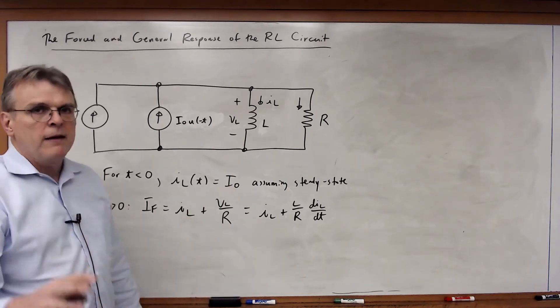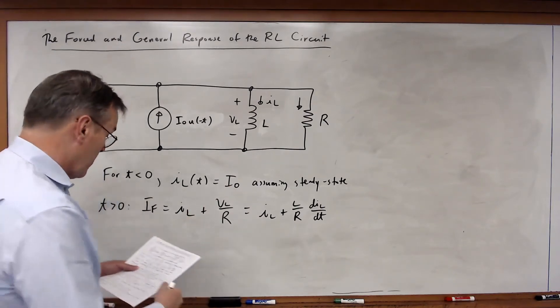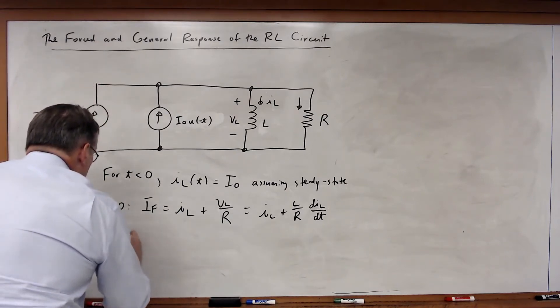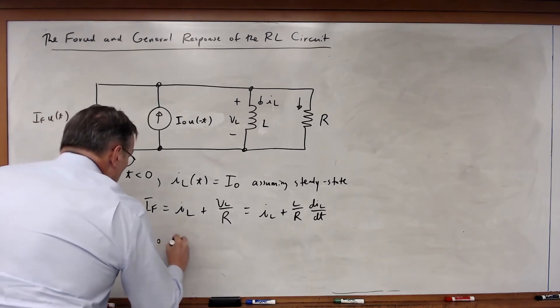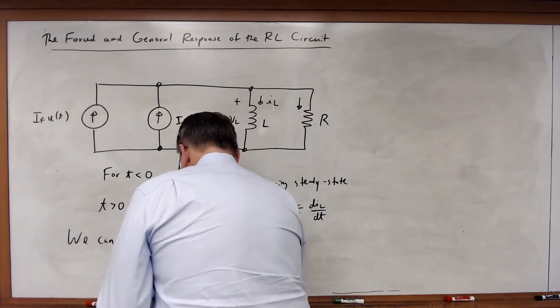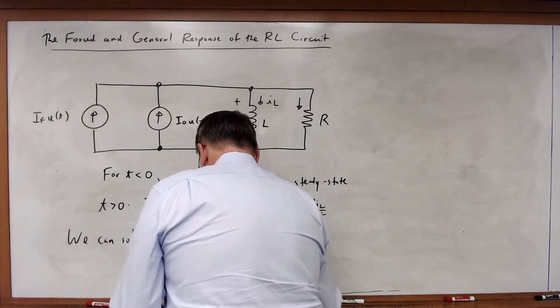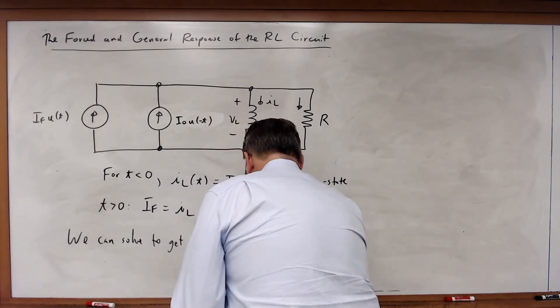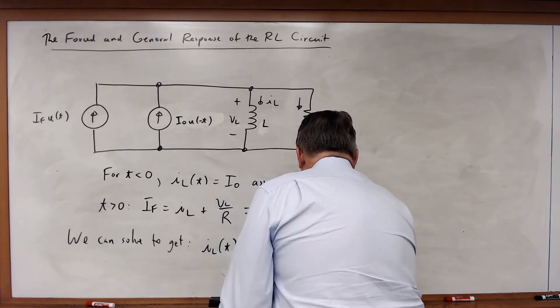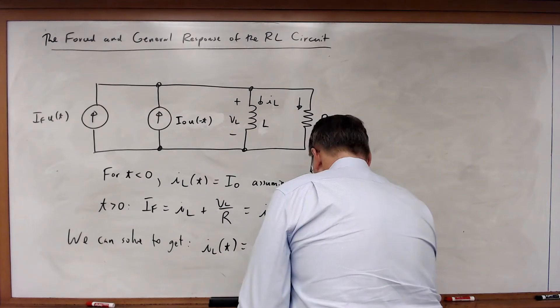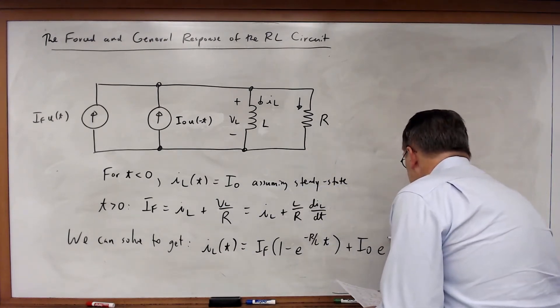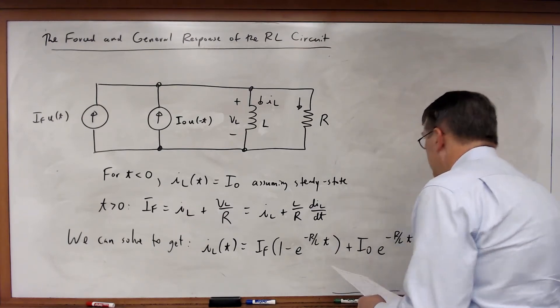The form of the solution will be the same form as for the RC equation. So we can solve to get the following, that IL of t is equal to IF times 1 minus E to the minus R over L times t plus I0 times E to the minus R over L times t.